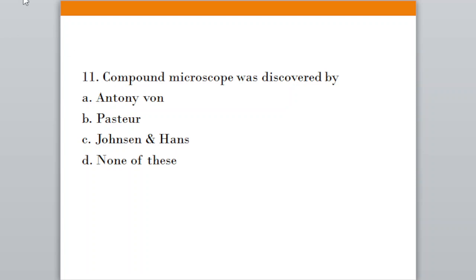Question number eleven: Compound microscope was discovered by. Option A, Anthony von Leeuwenhoek; Option B, Pasteur; Option C, Johnson and Hens; Option D, none of these. The correct answer is option C, Johnson and Hens.